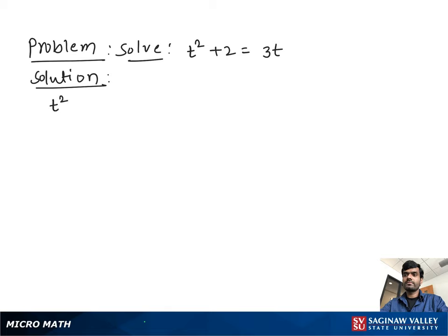Solve t square plus 2 equal to 3t. So what to do first, we bring all the variable and constant one side and 0 on another side.